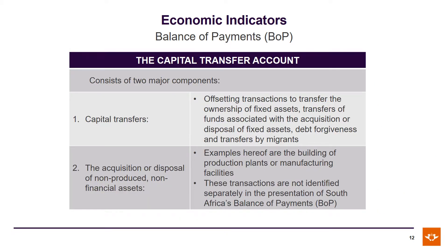The capital transfer account in the balance of payments consists of two major components: capital transfers and the acquisition or disposal of non-produced non-financial assets. Capital transfers include offsetting transactions to transfer the ownership of fixed assets, transfers of funds associated with the acquisition or disposal of fixed assets, debt forgiveness, and transfers by migrants. Examples of non-produced non-financial assets include the building of production plants or manufacturing facilities, and these transactions are not identified separately in South Africa's balance of payments.